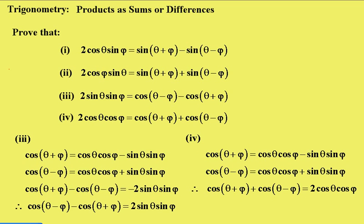Now in part 3, what we'll do here is get the expansion of cos(θ + φ) = cos θ cos φ - sin θ sin φ, and cos(θ - φ) = cos θ cos φ + sin θ sin φ.